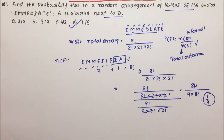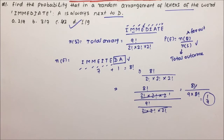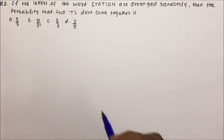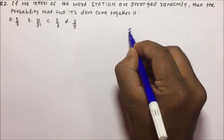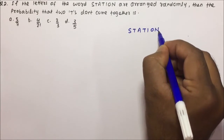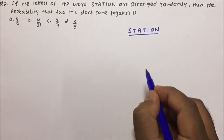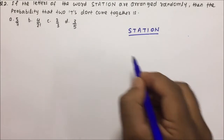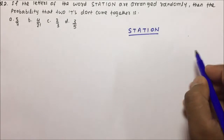This was a very good question which involved both probability and permutation and combination. Please understand this question. Now we are moving towards question number 2, which is again a very good question. If the letters of the word STATION are arranged randomly, then find the probability that the 2 T's do not come together.